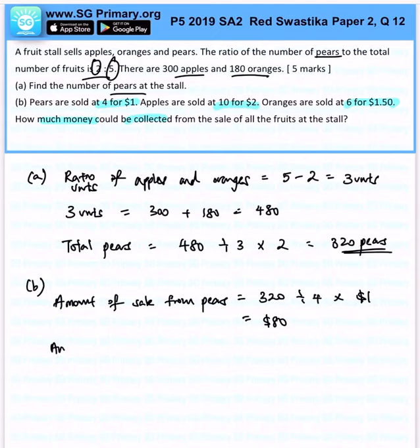Next, amount of sale from apples. We know that it is 10 for $2, so I want to see how many sets of 10 are there. We will take 300 divided by 10 times $2, and that will give us $60.